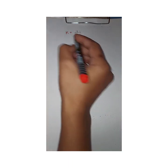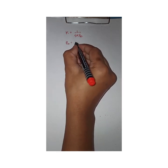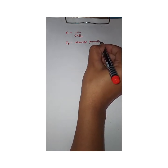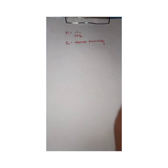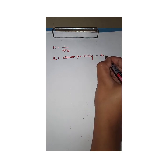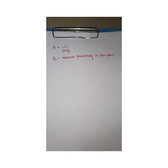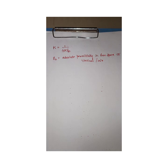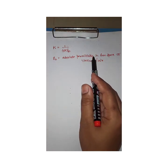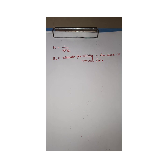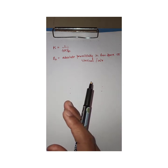This ε₀ is called the absolute permittivity of free space, or of vacuum or air. The symbol ε₀ (epsilon naught) represents the absolute permittivity in free space.